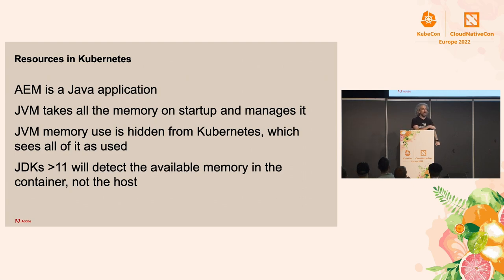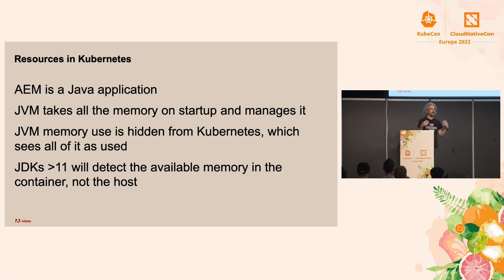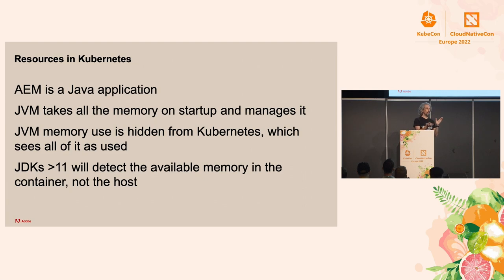For AEM specifically — a Java application — the JVM is going to take all the memory on startup and manage it. If you set 75% of memory as heap size on one gig, it takes those 750 MB and uses it all the time, and Kubernetes has no visibility on what's actually used. On JDK 11+, the JVM will detect how much memory limit is set and never try to use more than that. In previous versions, it would take the host memory by default, which typically caused crashes.